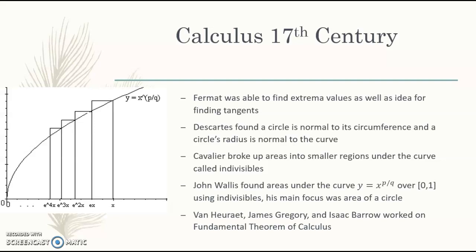Moving on to calculus in the 17th century. They were very focused on tangents in calculus back then. We have Fermat, who was able to find extrema of values as well as ideas for finding tangents. Here we have Descartes, who found a circle is normal to its circumference, and the circle's radius is normal to the curve. Looking at the picture over here, they used indivisibles to break up the area under the curve and approximate the area under the curve. We see here that this would be an overestimation because we have some rectangles that they're calculating that are above the curve. This is what Cavalier dealt with—he broke up areas into small regions and they called them indivisibles.